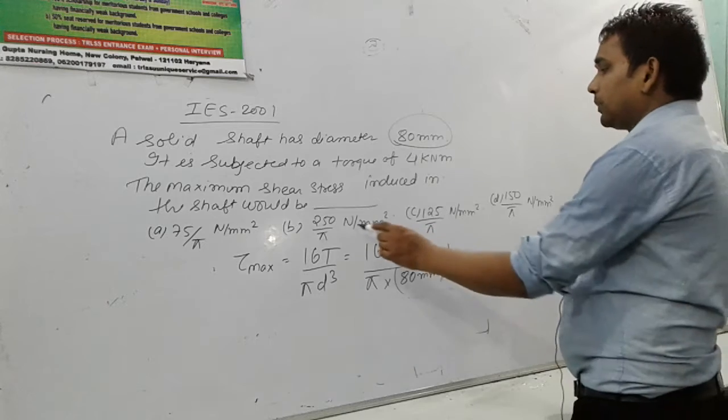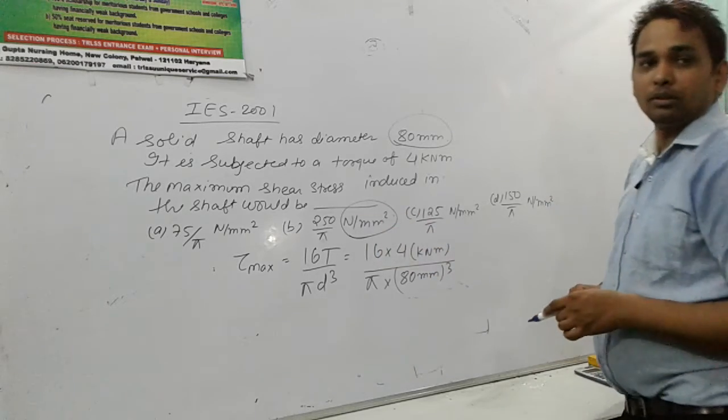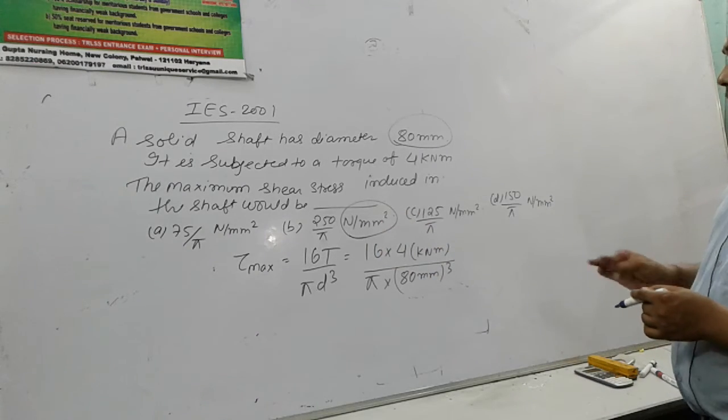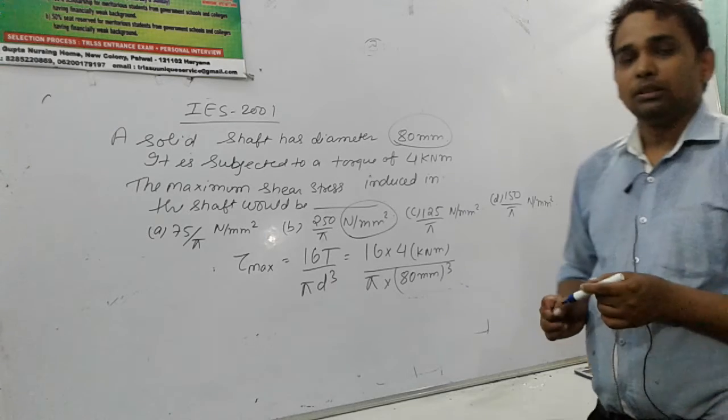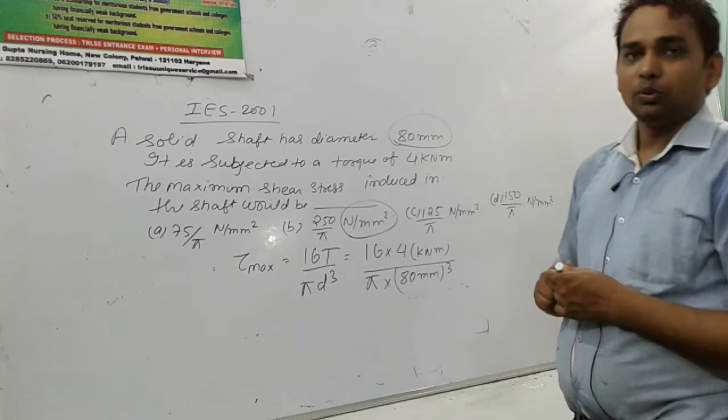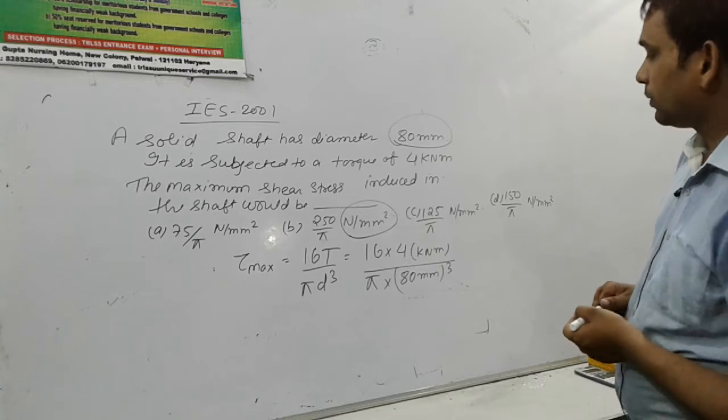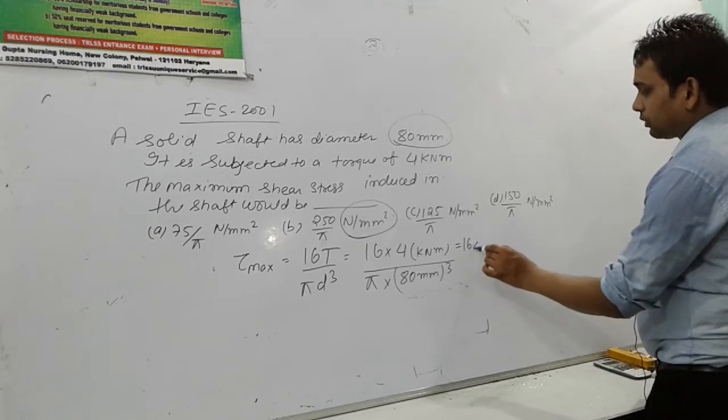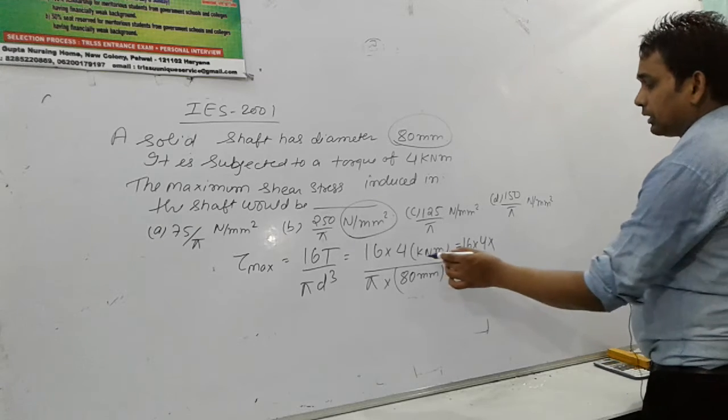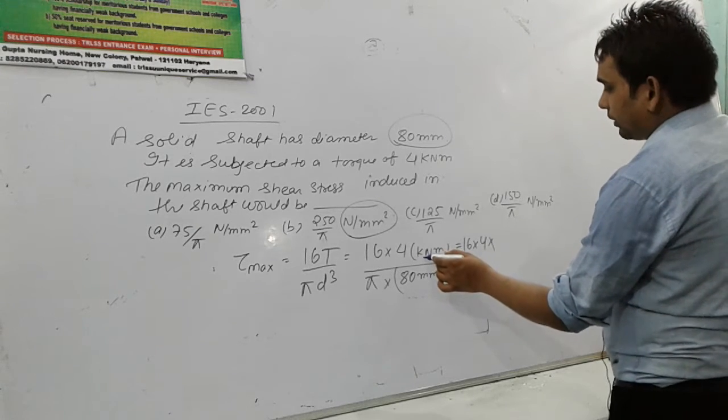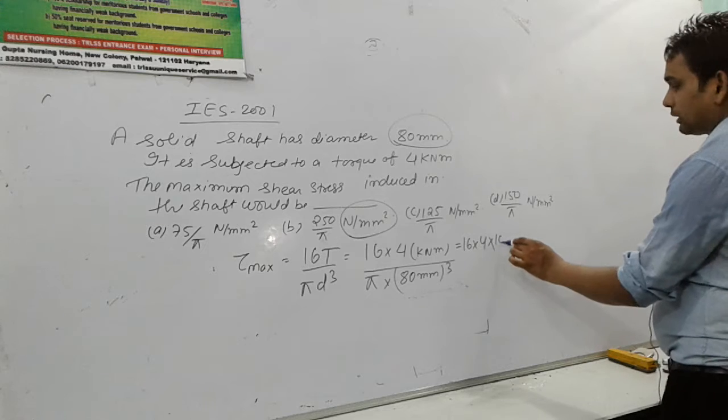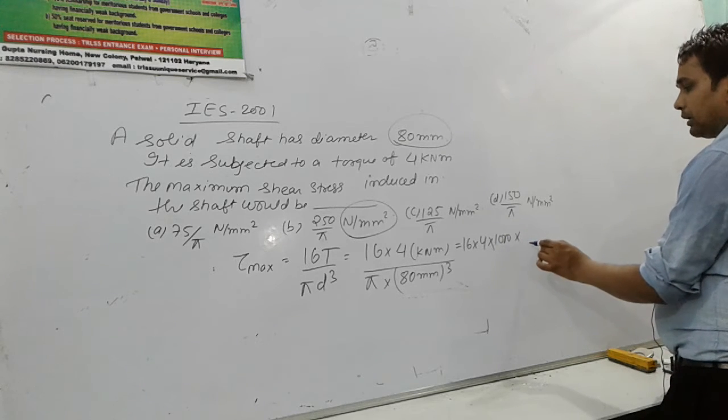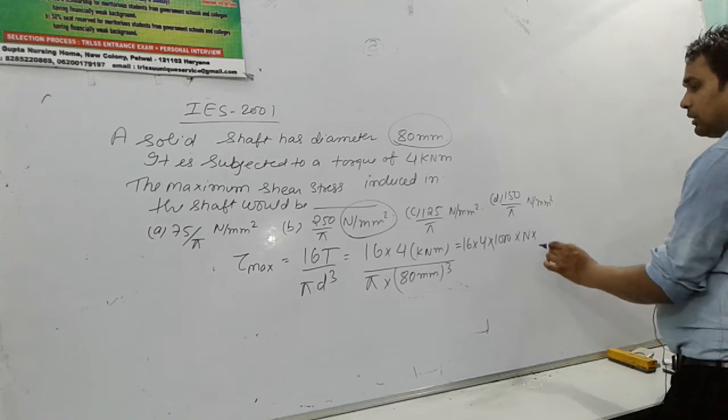Answer is in Newton per meter square. Answer is Newton per meter square means whatever unit we have to convert to Newton per meter square. How we convert? This will be 16 into 4, and this value of T we'll write here as 4000 Newton meter.